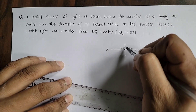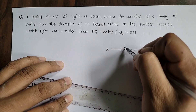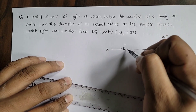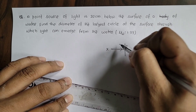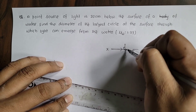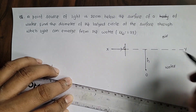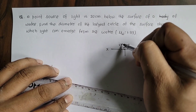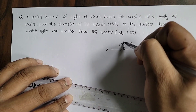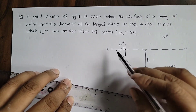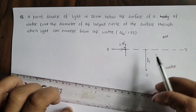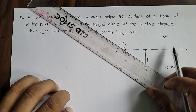If the incident ray is along the normal, the angle is 90 degrees — that is grazing incidence. The light rays along the surface make an angle of 90 degrees, and the corresponding refracted ray in the water bends towards the normal.